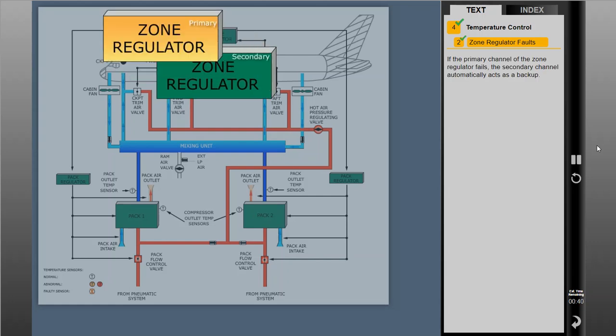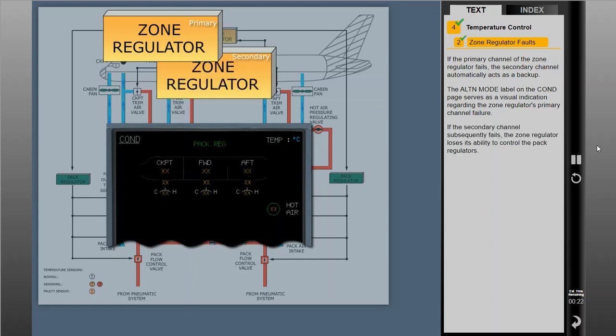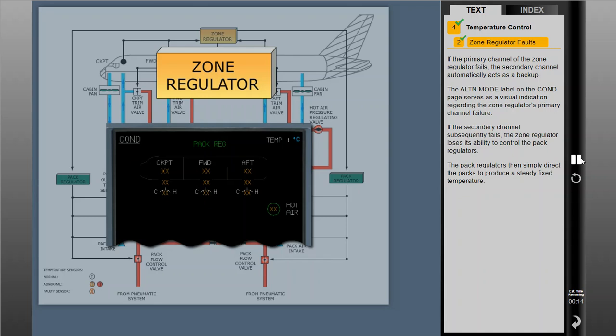If the primary channel of the zone regulator fails, the secondary channel automatically acts as a backup. The alternate mode label on the conditions page serves as a visual indication of the zone regulator's primary channel failure. If the secondary channel subsequently fails, the zone regulator loses its ability to control the pack regulators. The pack regulators then simply direct the packs to produce a steady fixed temperature. The lack of information on the conditions page and the label 'pack regulator' are indications that both channels of the zone regulator have failed.